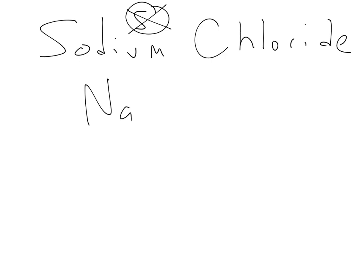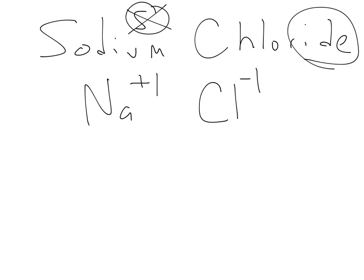If you look on your periodic table, sodium is Na with a +1 charge, and chlorine — which is where we get chloride from — is Cl minus 1. We want to make sure that those charges equal zero. They do in a 1 to 1 ratio, so I don't need to add any of either one of them. That is NaCl.